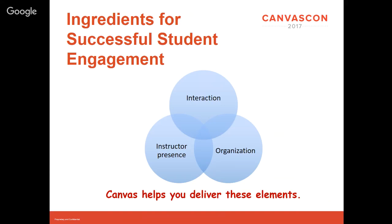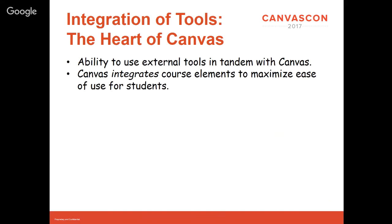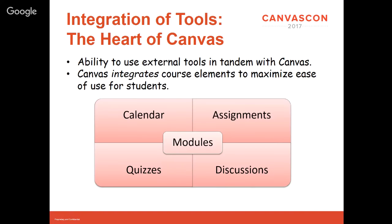The key to Canvas — what makes it work very well for this — is the integration of tools. We don't have to use just Canvas. Both of us use external tools, particularly for homework, because in the STEM context no generic learning management system can provide the detailed sort of feedback, particularly in chemistry where we have chemical drawings. But what Canvas does very well is allowing you to integrate different course elements to provide a default path and make it easy for students to navigate. What we do is treat the modules tool as the center of our course — almost every instructor does this.